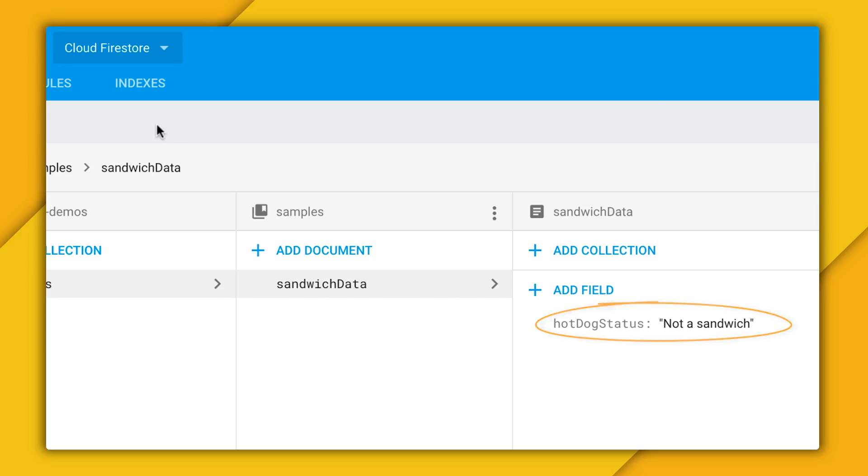And while it's great that we can see this data in the Firebase console, we need to show this important information to our users too. So next up, let's learn how to grab this data from the cloud and put it into our H1 tag.